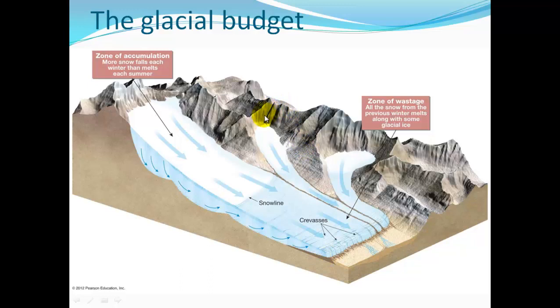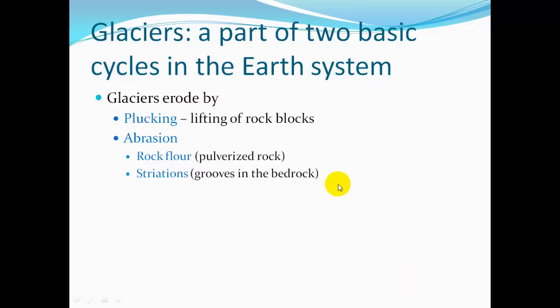These are alpine glaciers — here's a large one and two others that kind of merge. Glaciers erode the rock surface by plucking, lifting up blocks of rock from underneath them. They also abrade or scour the rock below, pulverizing it into rock flour, or carving grooves and striations into the bedrock.